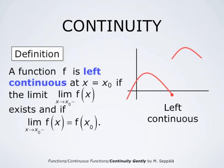We may speak about left continuous functions. We say that a function f is left continuous at x equals x₀ if the left-hand limit of f(x) — that is, the limit as x approaches x₀ through numbers smaller than x₀ — exists and agrees with the value of the function at that point. This particular red graph is the graph of a function which is left continuous at the point where its values jump.